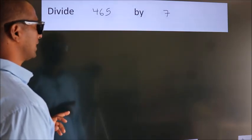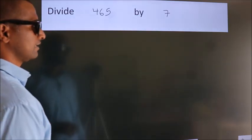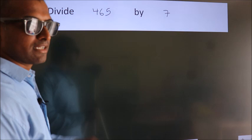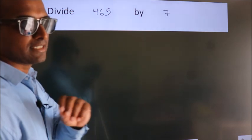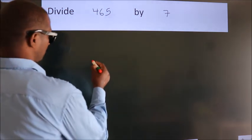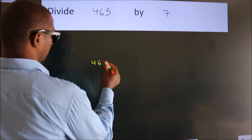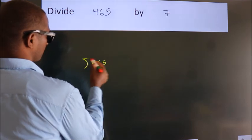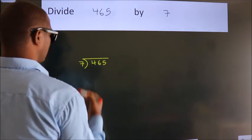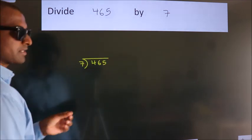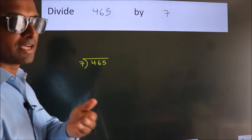Divide 465 by 7. To do this division, we should frame it in this way: 465 here, 7 here. This is your step 1.